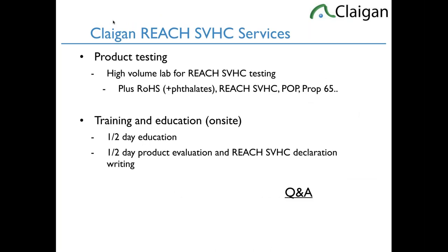One of the ways we can help: we're a pretty high-volume testing lab and we test for REACH SVHCs in complex products all the time, plus new RoHS requirements include phthalate restrictions kicking in for regular electronics in July of this year, REACH SVHCs, persistent organic pollutants, SCCPs — which are causing lots of recalls — and Prop 65. We also do training and education on-site, about half a day on what the rules are and what the high-risk materials are. The other half is hands-on, where we take your products and show you the high-risk materials, likely SVHCs, and create a declaration.